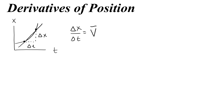Delta x over delta t as the slope equals what we call the average velocity. It's an average because that slope is only meaningful between those two points — this slope is not the same as the slope between some other two points. So we have to call it an average; it's not the velocity at any certain moment between the two points.